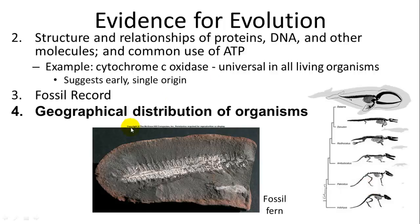The fossil record also supports evolution — fossil ferns and the evolution of whales show intermediates from one life form to another, dated millions of years old. Additionally, the geographical distribution of organisms, noted by both Wallace and Darwin in their travels, shows organisms adapted to different places. For example, in Australia you find marsupials filling similar ecological niches as placental mammals elsewhere.